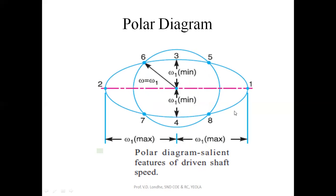Points one and two on the polar diagram represent the maximum speed of the input, and points three and four represent the minimum speed. The major axis of the ellipse corresponds to maximum speed and the minor axis corresponds to minimum speed.